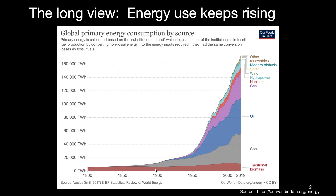Starting about 1850 to 1900, fossil fuels began to appear. First was coal in the late 19th century, followed by oil and then gas. Then these more exotic sources — because they didn't really become significant until close to 1950 — where we started to see nuclear and various other what are called modern renewables, to distinguish them from traditional biomass.